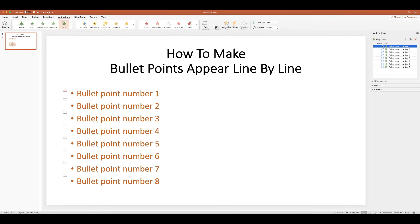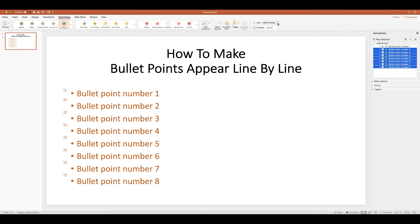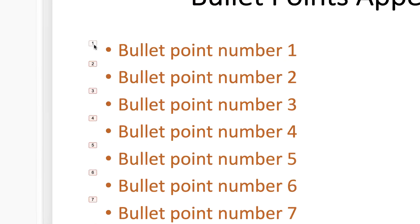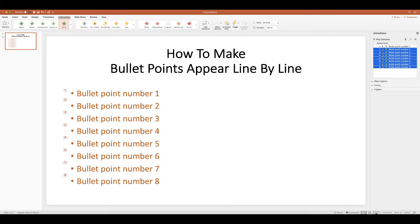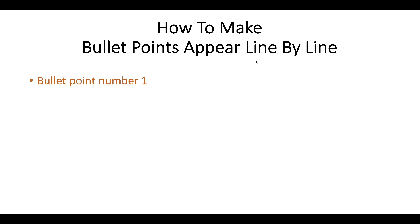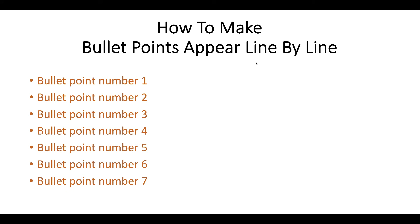If we want our bullet points to come in one at a time on mouse click, there are two ways to do it. The first way is to click on the second bullet point (the one with the clock), hold the Shift key and click the last one to highlight all bullet points with clocks, then go back up to Start, click the drop-down, and click On Click. You can see that each bullet point number has changed into its own sequence, so clicking through the presentation brings each one in separately.